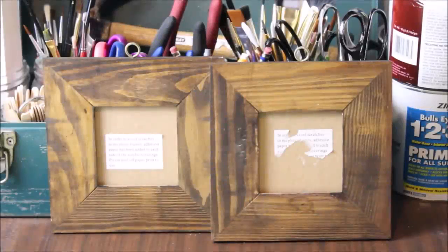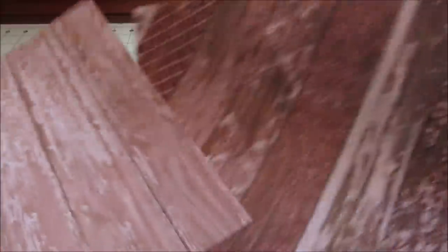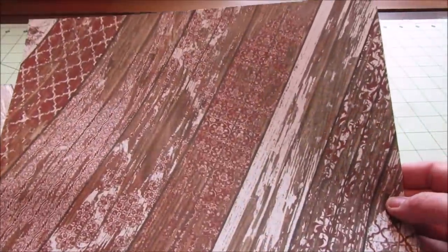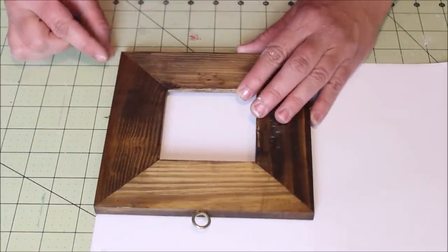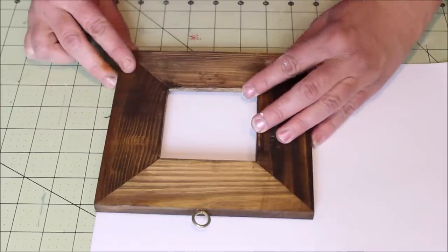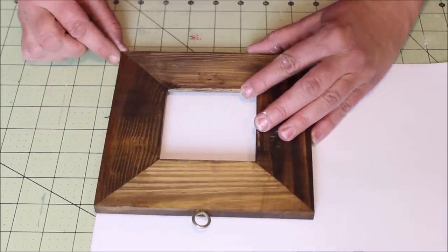Today's first project starts out with these two wood frames from the thrift store and then these two pieces of scrapbook paper that I found at Hobby Lobby. Aren't they awesome? I started out by placing the paper right side down on my work surface and then lining up my frame on top of it.